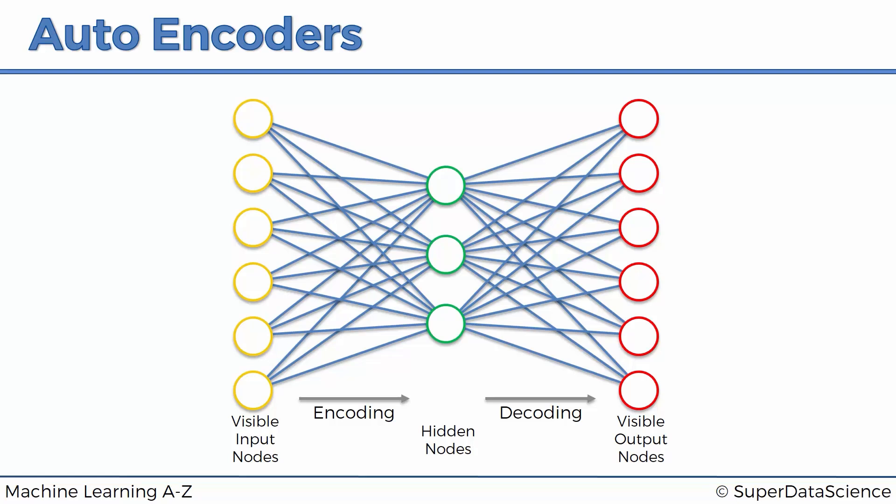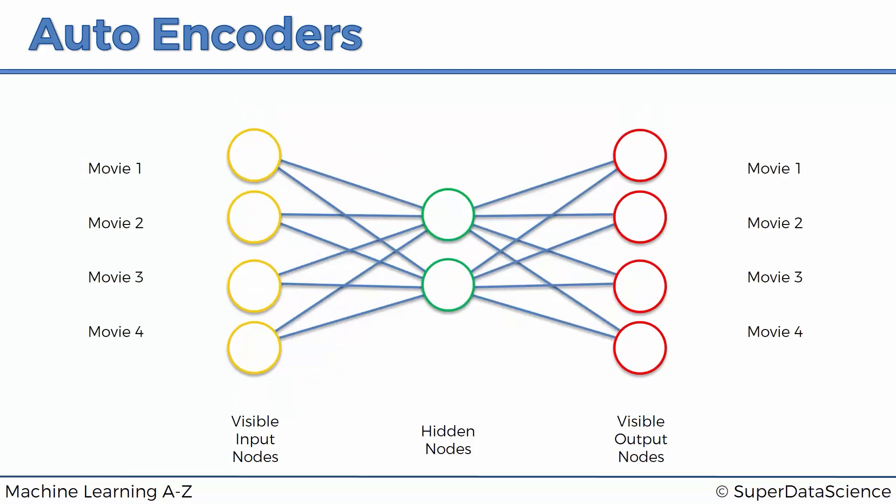Alright so that was a quick breakdown of the architecture of autoencoders and now let's have a look at an example of how they actually work so we can understand them better on an intuitive level. So there's a simplified autoencoder with just four input nodes and two nodes in the hidden layer.